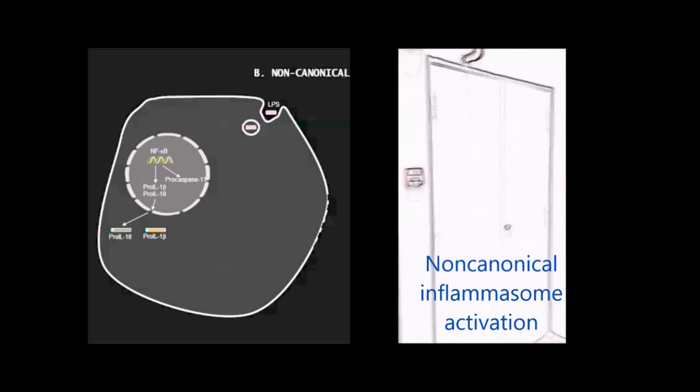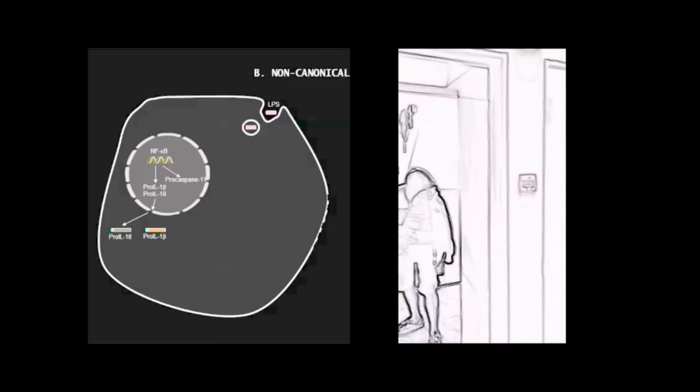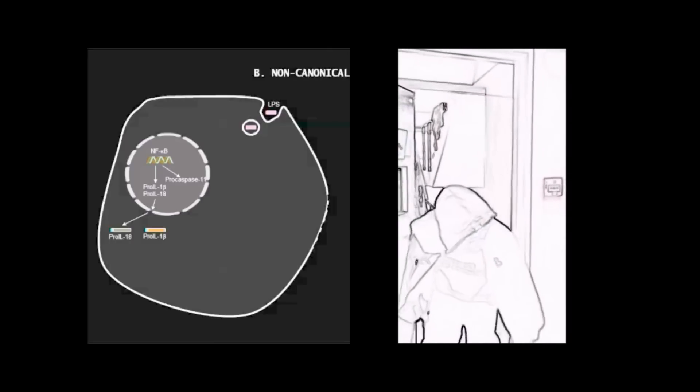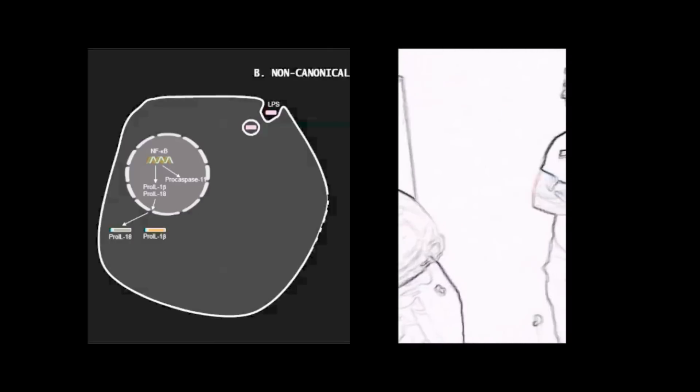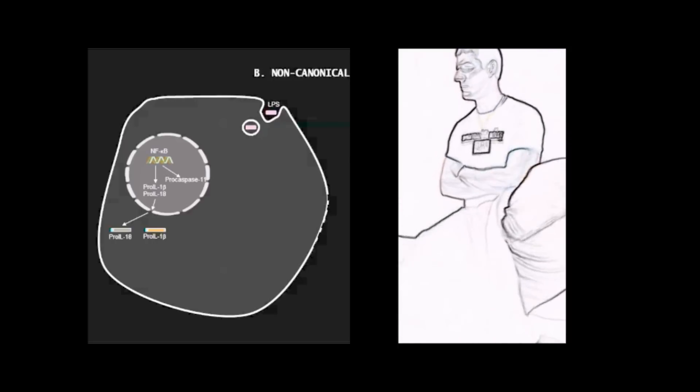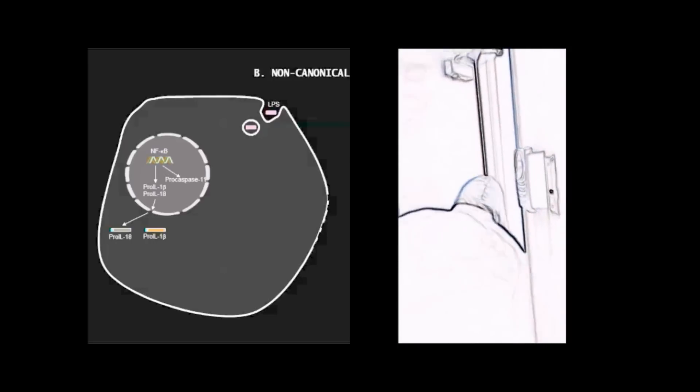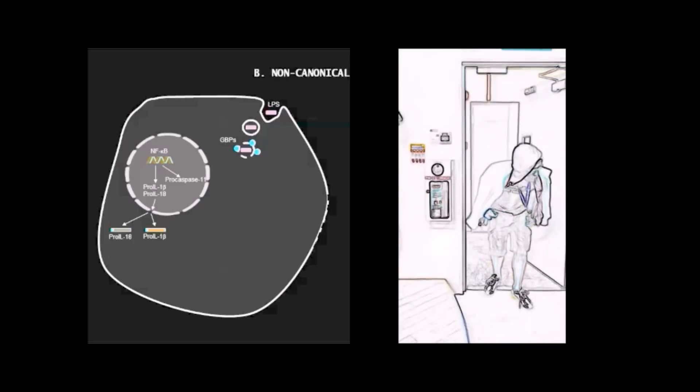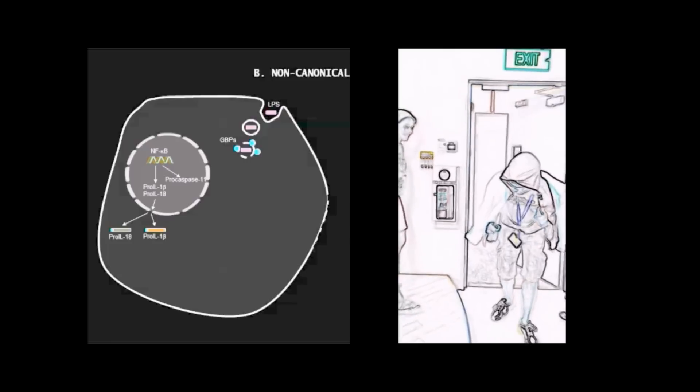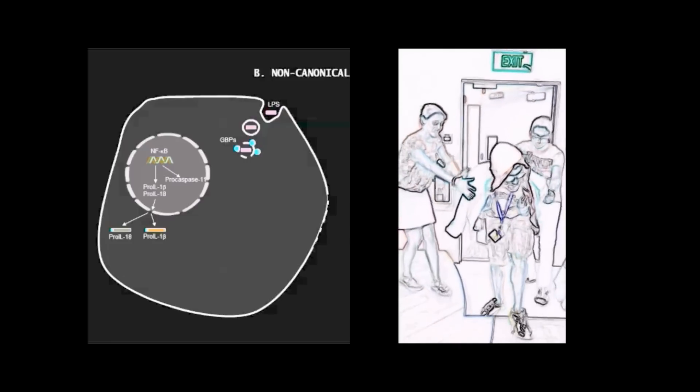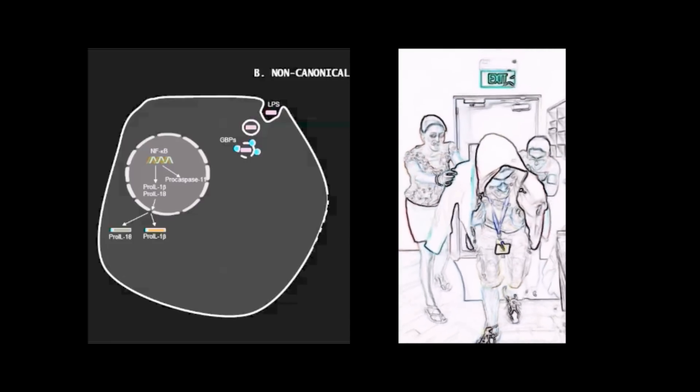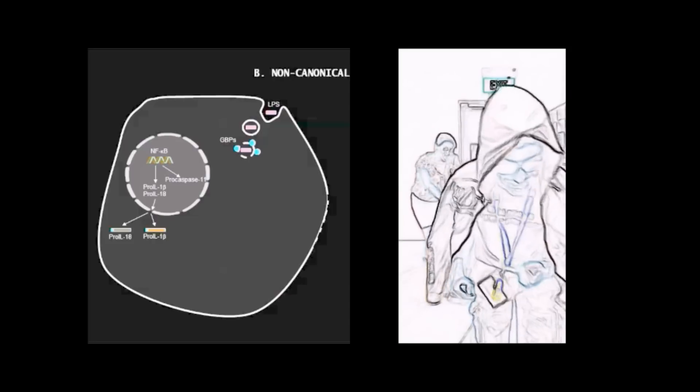Now onto the recent identification of the non-canonical inflammasome pathway. When LPS is in abundance or contained within vacuoles, it is able to bypass TLR-4 undetected. Guanylate binding proteins promote the lysis of these vacuoles and LPS is able to enter the cytosol of the cell.